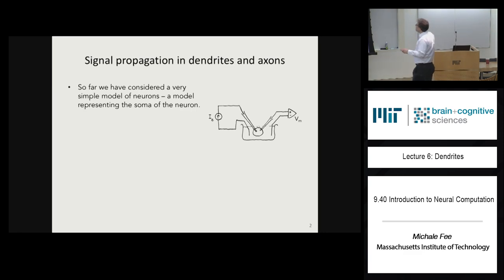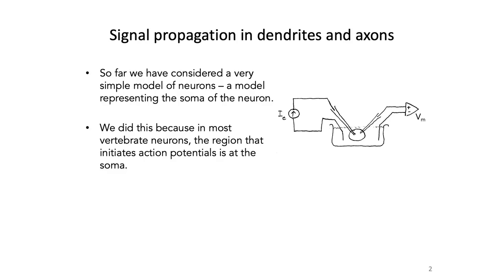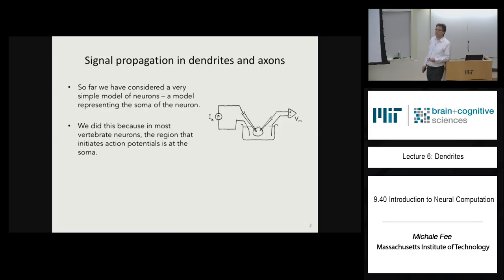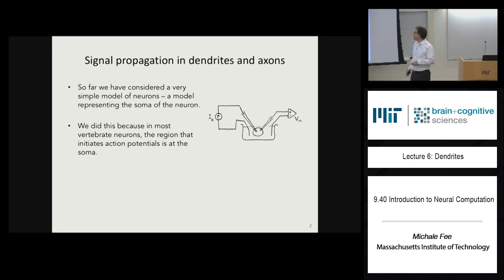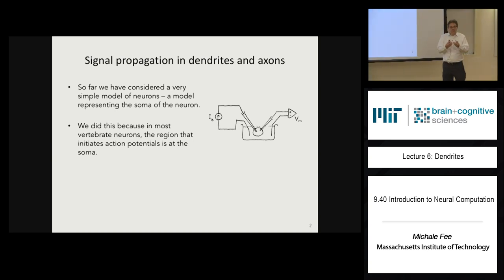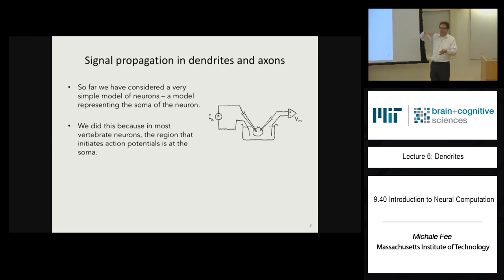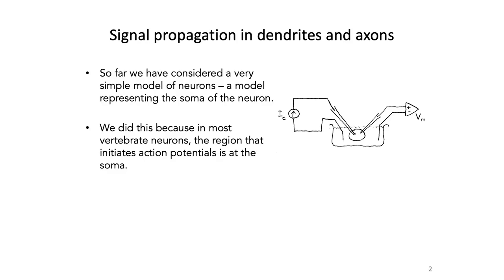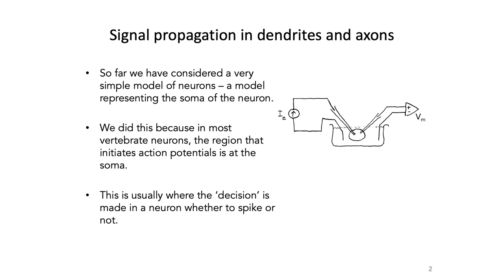In most vertebrate neurons, the soma is the site at which the decision to make an action potential is made. All kinds of inputs come in, the soma integrates those inputs, accumulates charge, reaches some spiking threshold, and then generates an action potential. That's where the decision is about whether a neuron is going to spike or not.